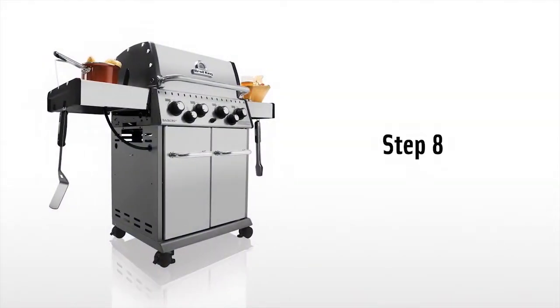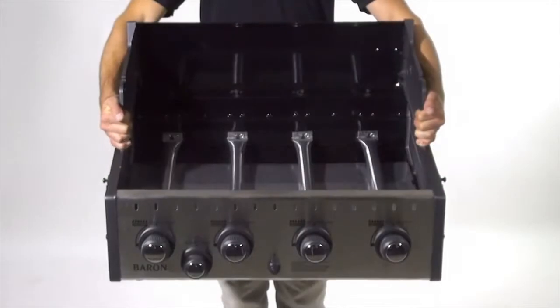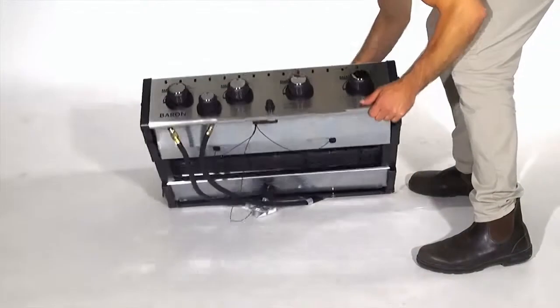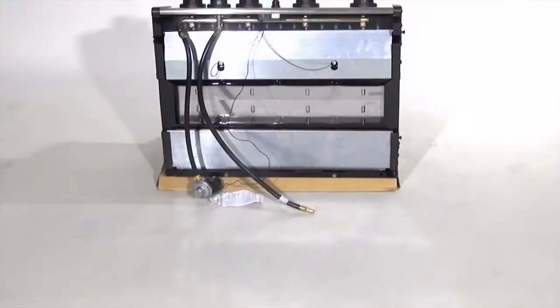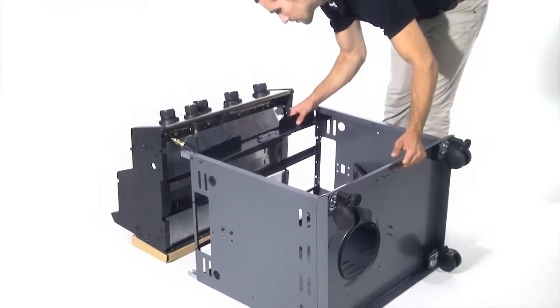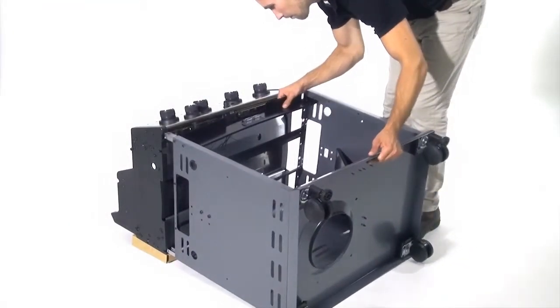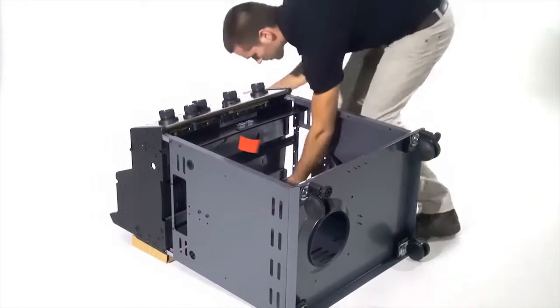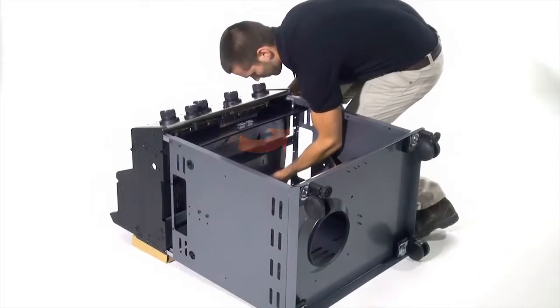Step 8. Lay the cook box assembly on its back. Now use the box of the cooking grid to elevate the cook box. Uncoil the electrode wire, regulator, and side burner hose. Bring the cabinet assembly in line with the bottom of the cook box. Be sure to pass the electrode wire, regulator, and side burner hose through the gap towards the front of the cabinet.